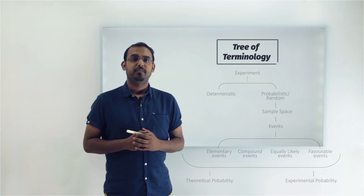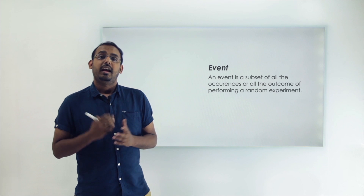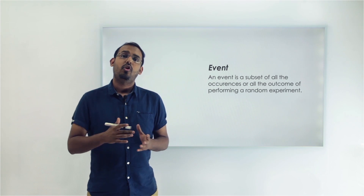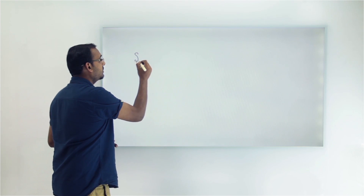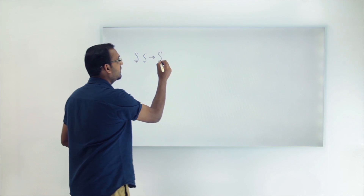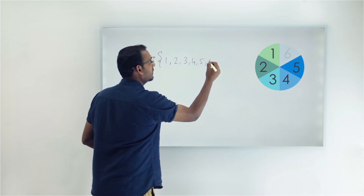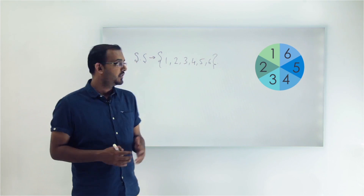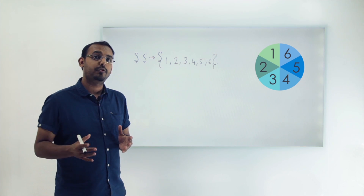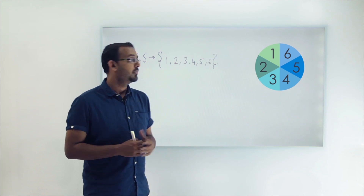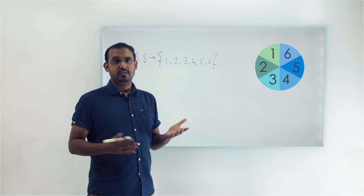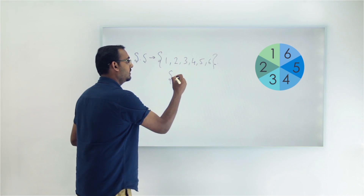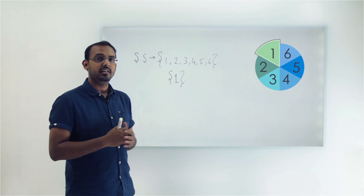Events is a very important concept in probability that you should be familiar with. An event is a subset of all the occurrences or all the outcomes of performing a random experiment. For example, suppose I roll a dice once. We have seen that all the outcomes — the sample space of rolling a dice — are the numbers one to six. An event can be defined as any subset of these possible numbers. So getting the number one is an event.